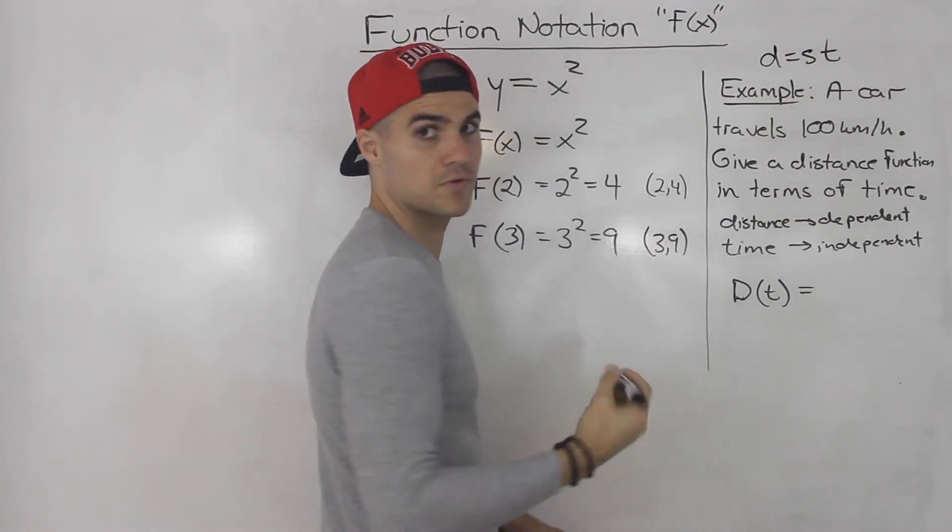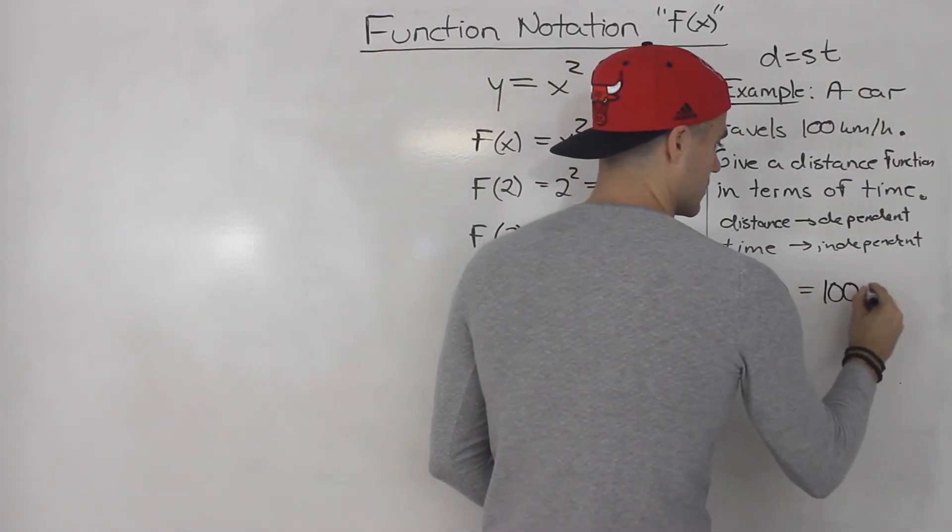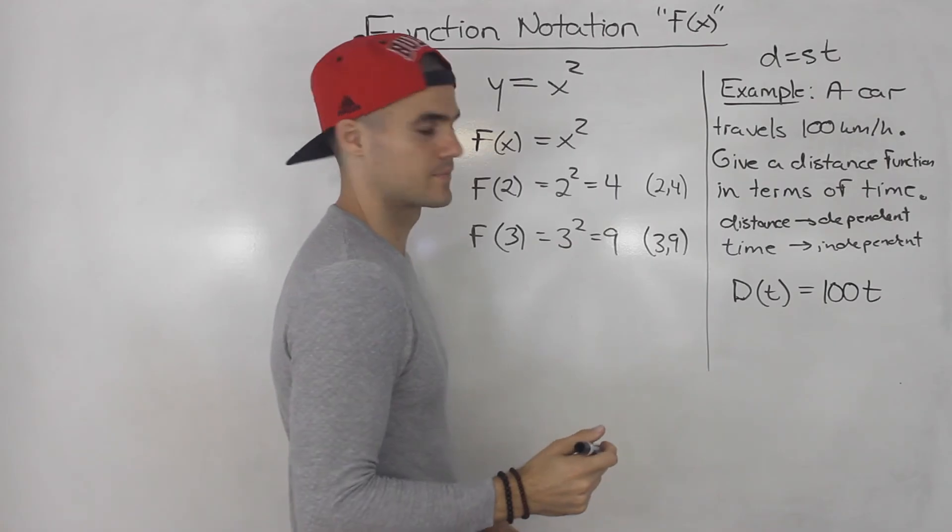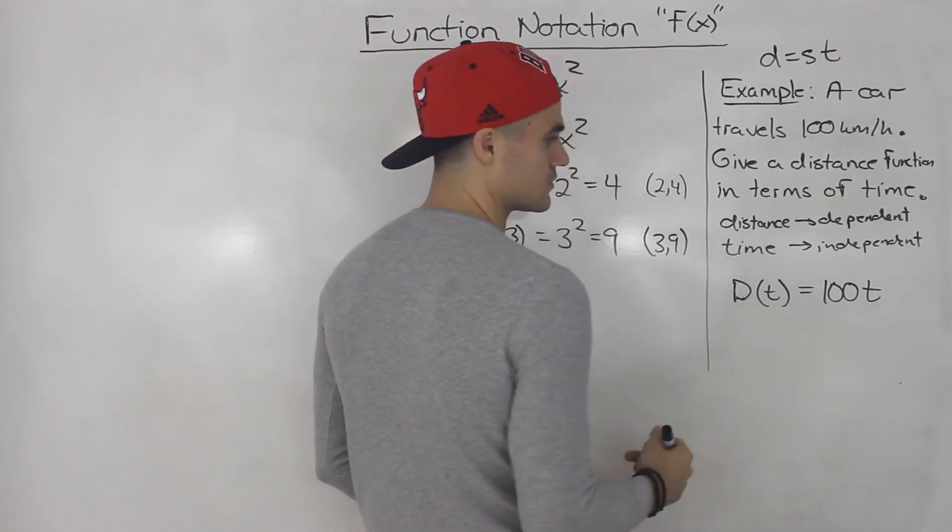We know the speed, it's 100 kilometers per hour. We don't know the time, that's the variable. So the function is 100t. Right? So the distance in terms of time is equal to 100t.